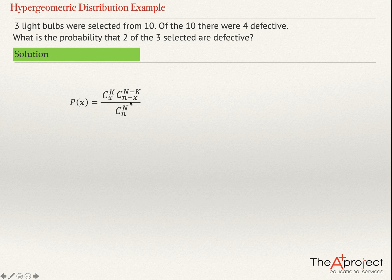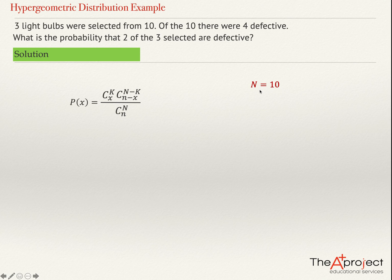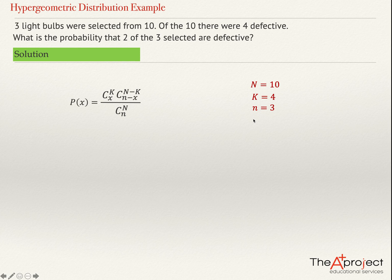And this is the number in the sample — the number of failures is n minus x. Obviously, if I got 2 successes, then I'm going to have 3 minus 2 equals 1 failure. So, to summarize: n equals 10, the population is 10, the number of successes in the population is 4, the sample size is 3, and I'm computing the probability of x equals 2.